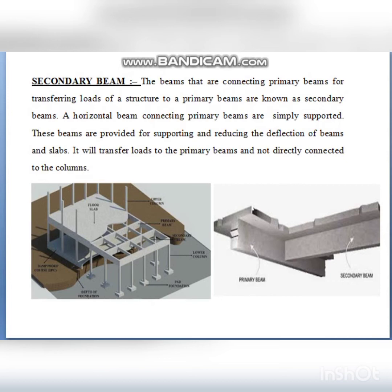To summarize: the beam connected column to column is always known as the primary beam. The beam connected either beam to beam or wall to wall is known as the secondary beam. A beam with one side connected to a beam and one side to a wall is also known as a secondary beam. When connected to column supports alone, it is called the primary beam.